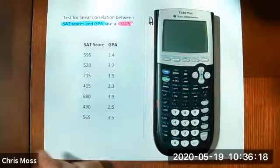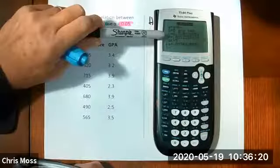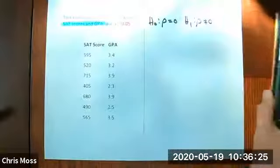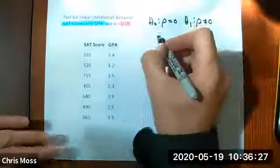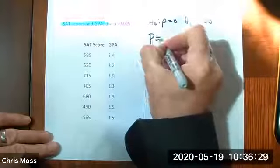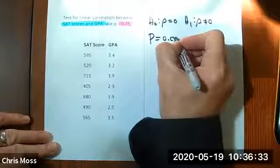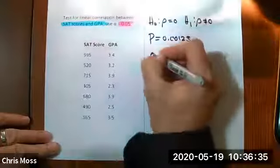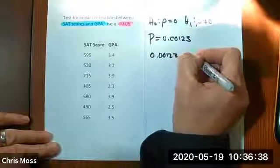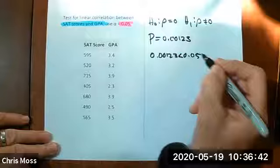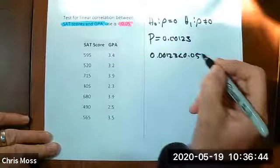Hello, p-value right there, 0.00123. So let me note that. 0.00123 with rounding. 0.00123, 0.05. It is less than 0.05. So we will reject the null hypothesis.